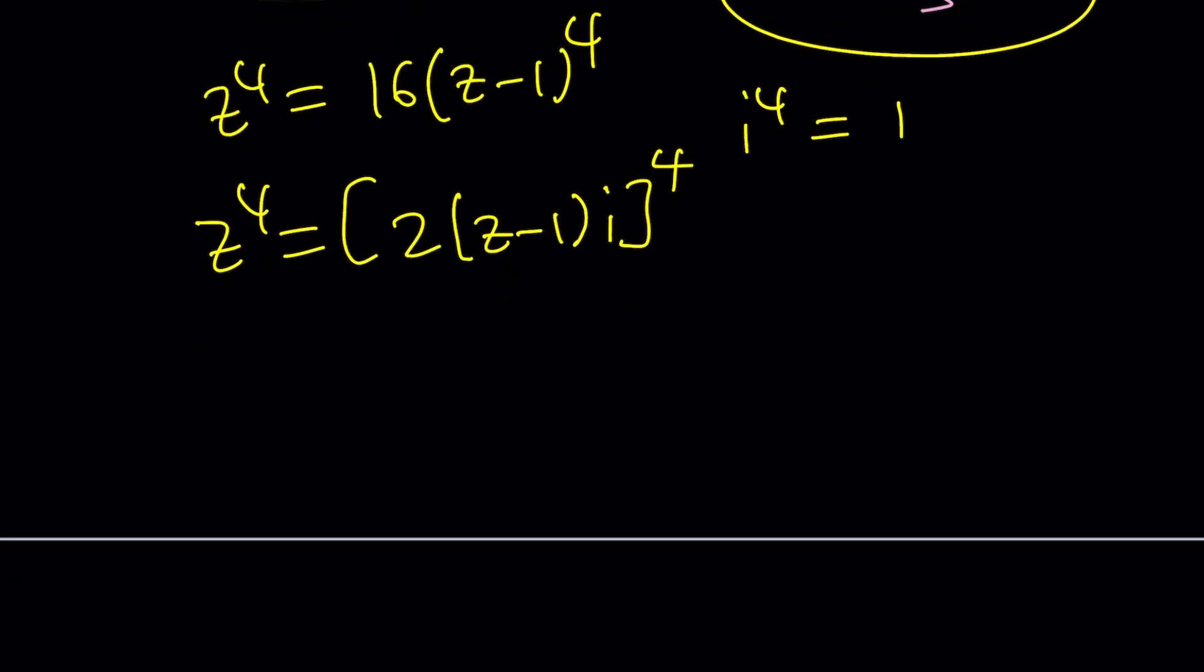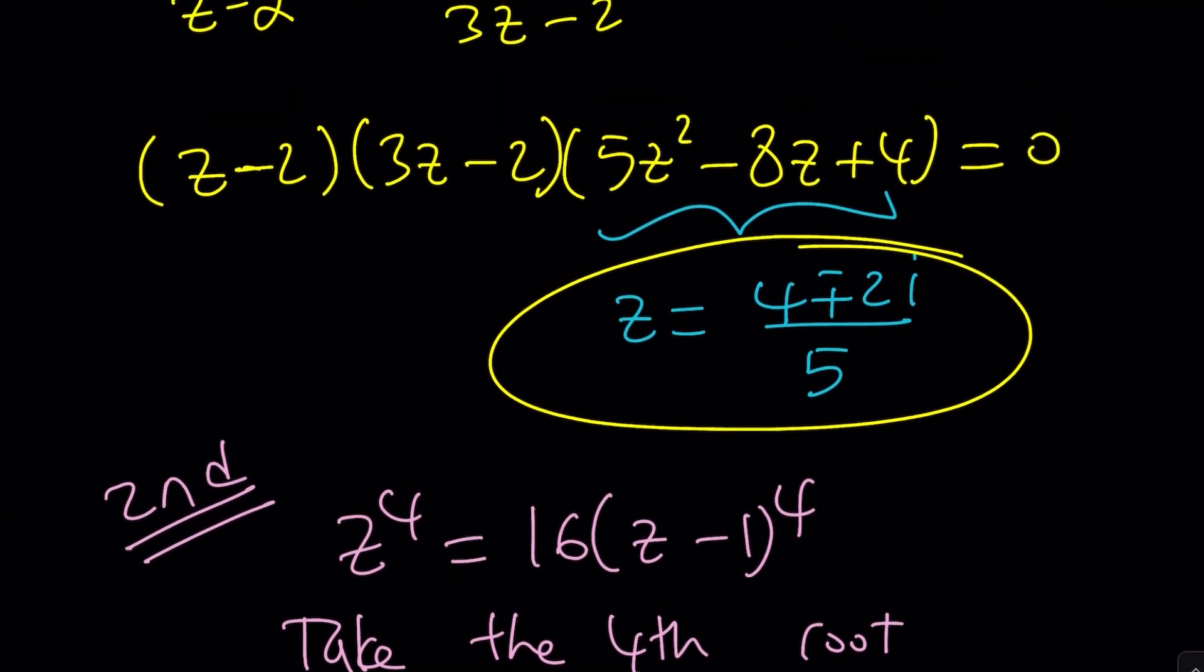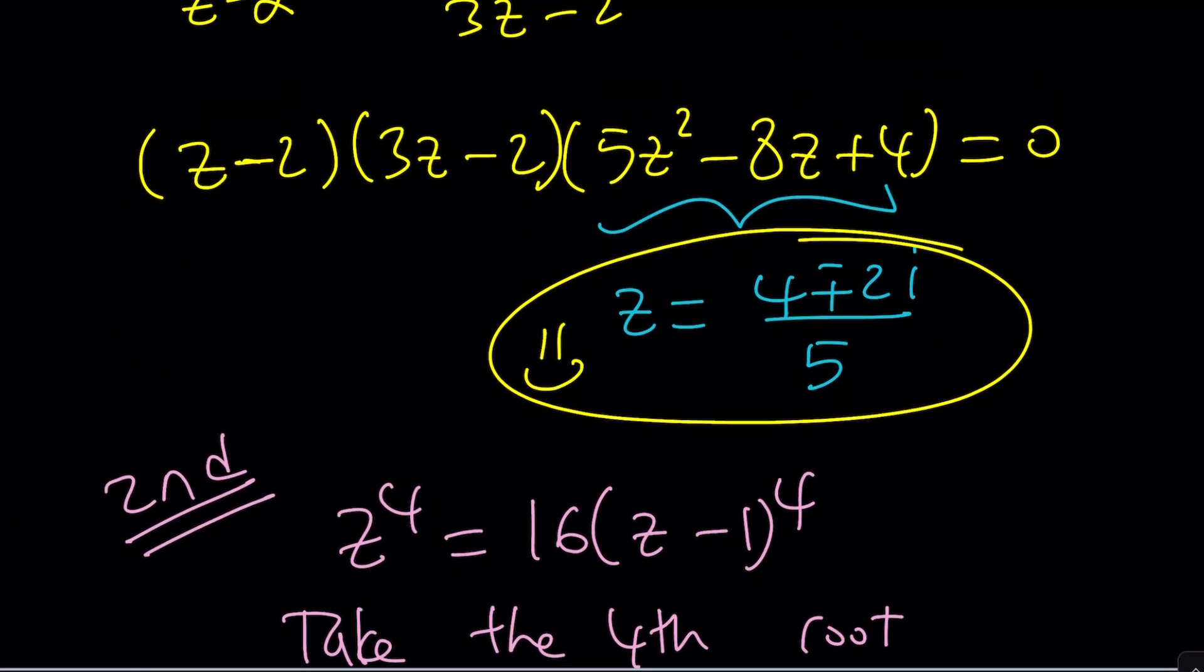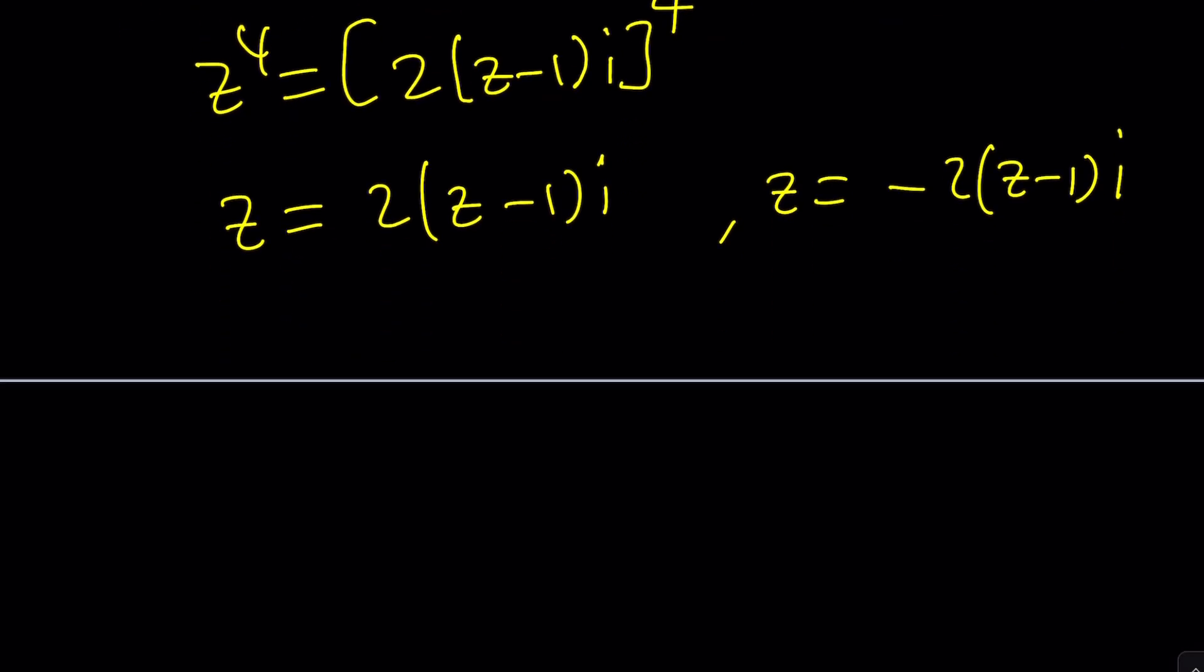And when you take the fourth roots, in addition to what we already have, you can go ahead and consider the following. Z can be written as 2 times Z minus 1 times I, and Z can be written as negative that. Obviously when you raise the opposite to the fourth power, you're going to get the same thing. And from here, obviously, you can solve for Z and you'll get the exact same solutions that we talked about. Make sense? Awesome. So let's go ahead and take a look at the third method. We still have to briefly talk about the fourth, so I want to spare some time for that too.